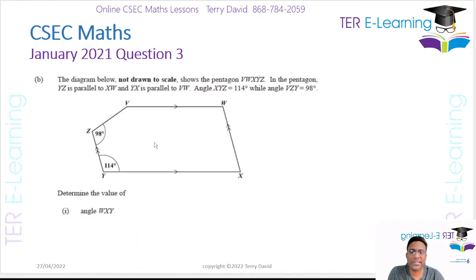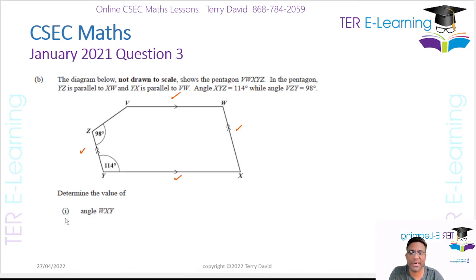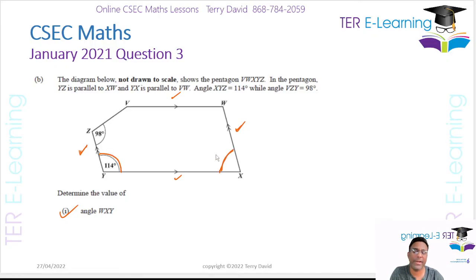In this question we have a diagram not drawn to scale showing a pentagon. Some lengths are parallel — this length is parallel to this length, and this side is parallel to this side. They give us some angles: 98 and 114. We want to work out angle WXY. WXY is this angle here. This line and this line are parallel, so 114 and WXY are co-interior angles.